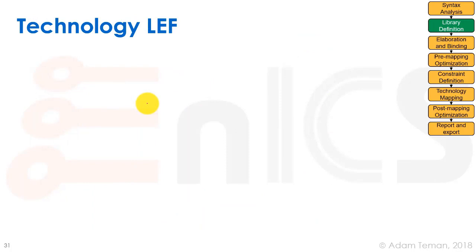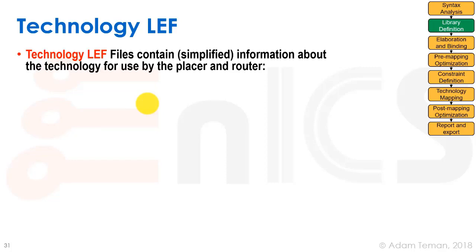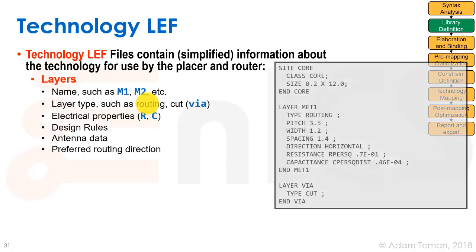There is another piece of the LEF definition called the tech LEF, or technology LEF. The technology LEF contains simplified information about the technology for use by the placer and the router. That means it defines things like what the metal one layer is called — maybe it's called M1 or MET1. That's described in the technology LEF, which is sometimes a separate file and sometimes included in the same file as your standard cell library.